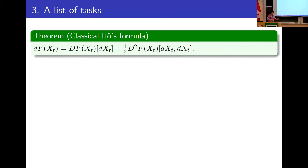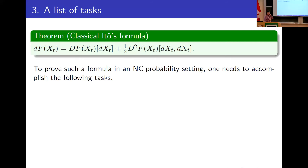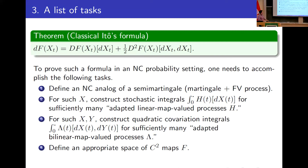Having stated Itô's formula, I'll describe the tasks that must be accomplished to make sense of this formula in a non-commutative setting. There are four objects in the formula, and each task is devoted to converting one into a non-commutative version. First, we need a non-commutative analog of a semi-martingale — it will be some kind of non-commutative martingale plus a non-commutative FV process, as David will explain.